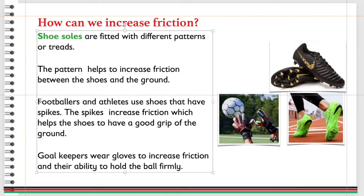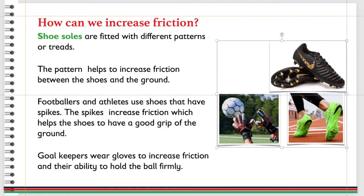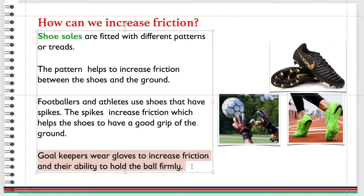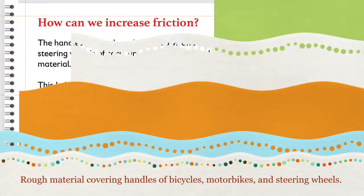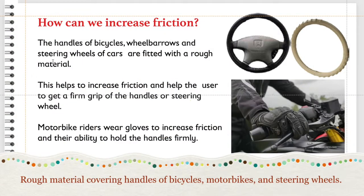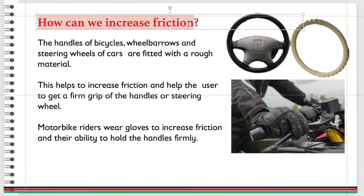Footballers and athletes use shoes that have spikes. The spikes increase friction, which helps the shoes to have a good grip of the ground. Goalkeepers wear gloves to increase friction and their ability to hold the ball firmly.